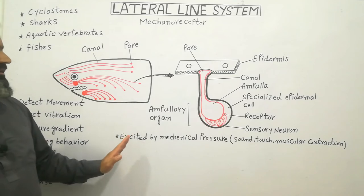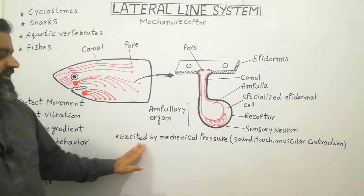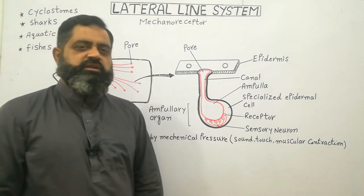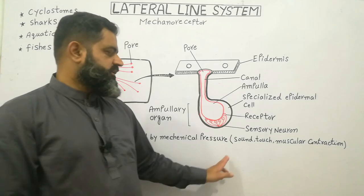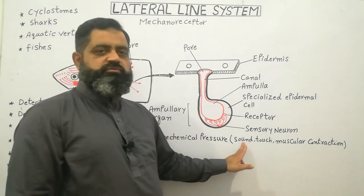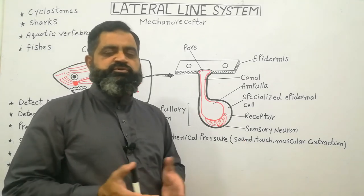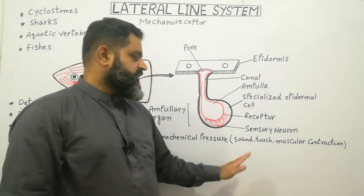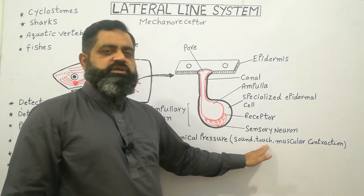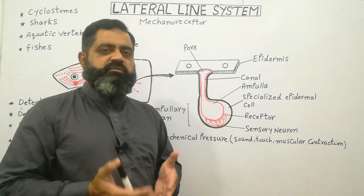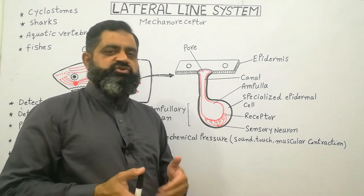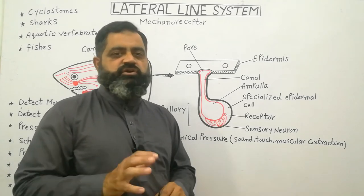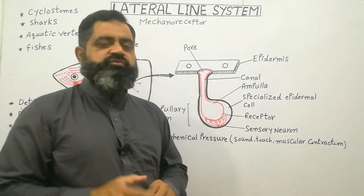The lateral line system is excited by mechanical pressure. Mechanical pressure can be a sound produced in water, touch by another animal, fish, or predator, or muscular contraction of the body of the fish.